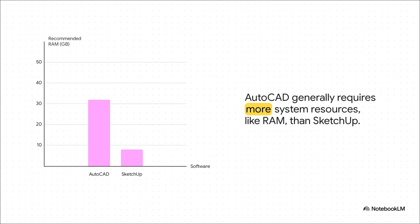And it's not just the cost of the software itself. AutoCAD is a much heavier program — it generally needs more RAM and more storage space. To run really big, complex AutoCAD projects without any hiccups, you're going to need a more powerful, and therefore more expensive computer. SketchUp, by comparison, is pretty lightweight and will run just fine on most modern machines.